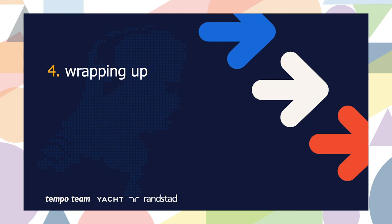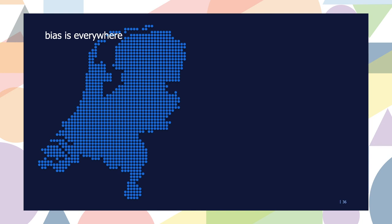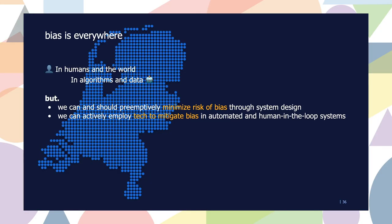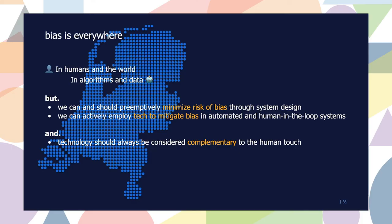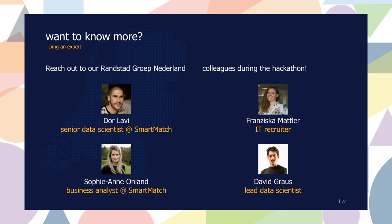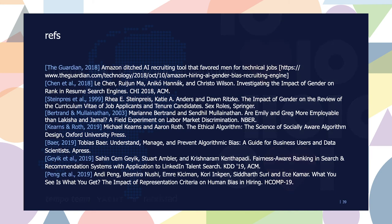To wrap up: bias is everywhere — both in humans and the world, and also in algorithms and data. Importantly, we can and should preemptively minimize the risk of bias through system design, including how you design your features and models. We can also actively employ technology to mitigate bias in automated and human-in-the-loop systems. Technology should always be considered complementary to the human touch, and full reliance on only technology can be tricky. I hope I've been able to convince you that this is a novel, emerging, and exciting field of research already being applied in practice. Four expert colleagues are available during the hackathon — please reach out to them. Thank you very much for your attention, and as I promised, I have a big reading list for you.